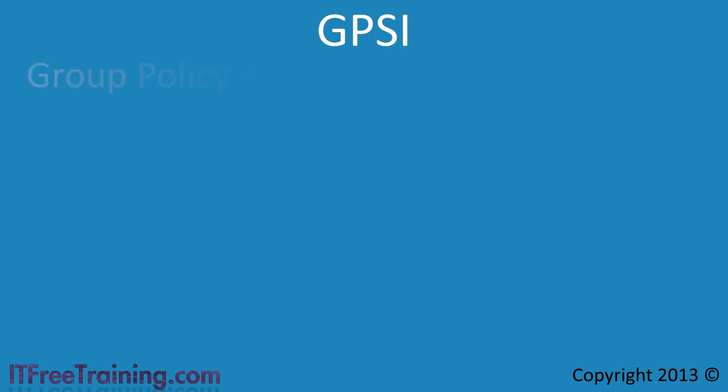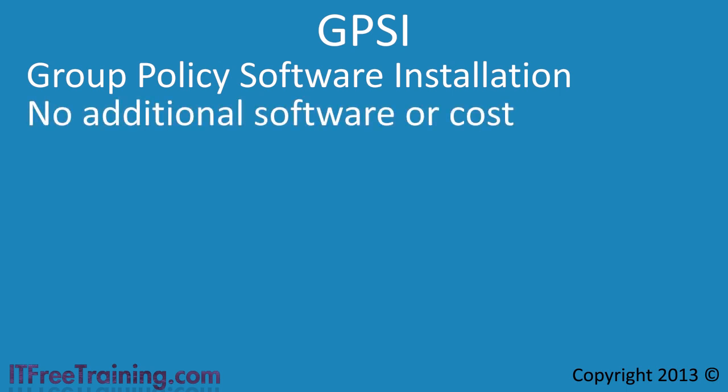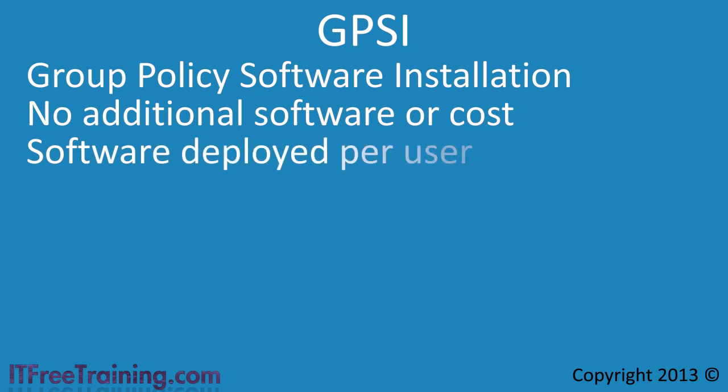The system used to deploy software via Group Policy is called Group Policy Software Installation, or GPSI. Group Policy provides the basic infrastructure to allow you to manage software in your organization. Using Group Policy Software Installation requires no additional software other than having a domain infrastructure. Software can be deployed per computer or user, and depending on whether you are deploying the software for the user or the computer, there are different options available. This brings us to the next topic: publishing and assigning applications in Group Policy.